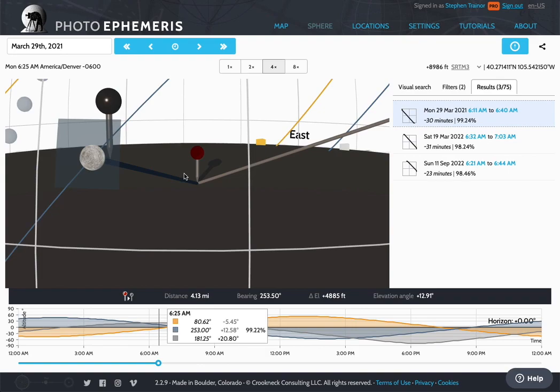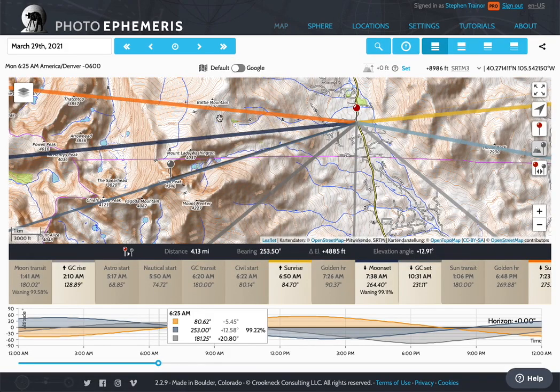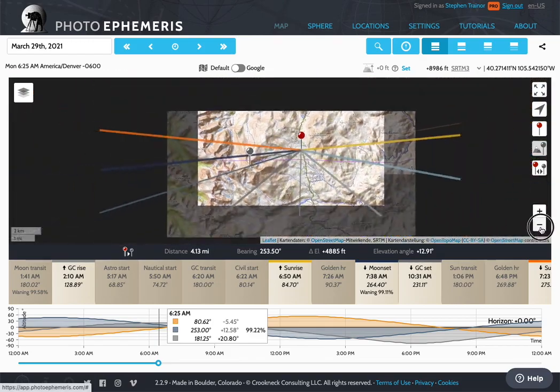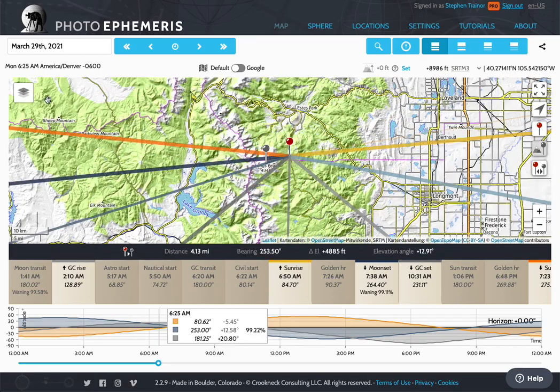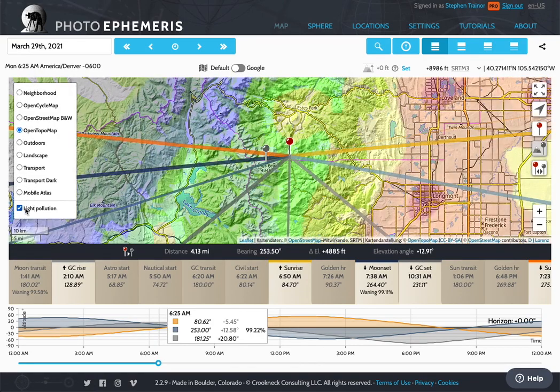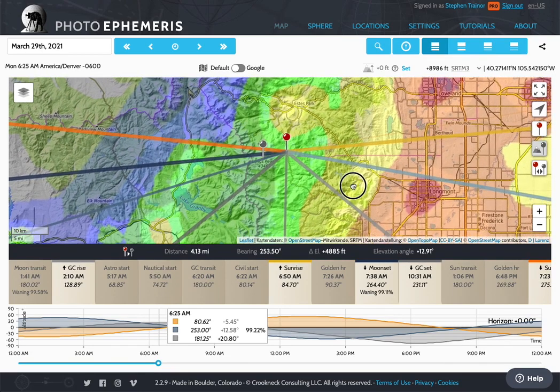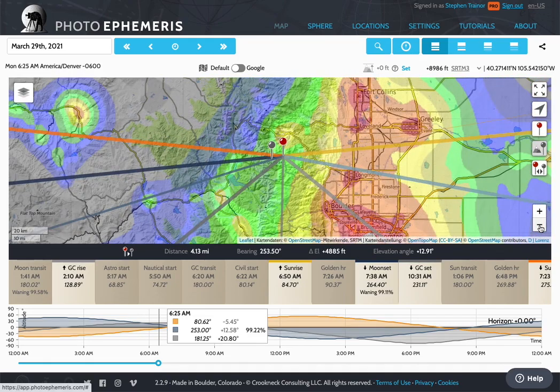So that's a quick walk through the pro features of TPE. We covered map. We covered the additional map styles, Google Maps. There's one more little thing I forgot to show you. I'm going to come back to show you that now. And that is pro subscribers can also use the light pollution overlay, which for astrophotography is great. And there it is. You can see that Long's Peak is getting better than here in Boulder and Longmont in the Front Range. But there's even darker skies available the further west you go.